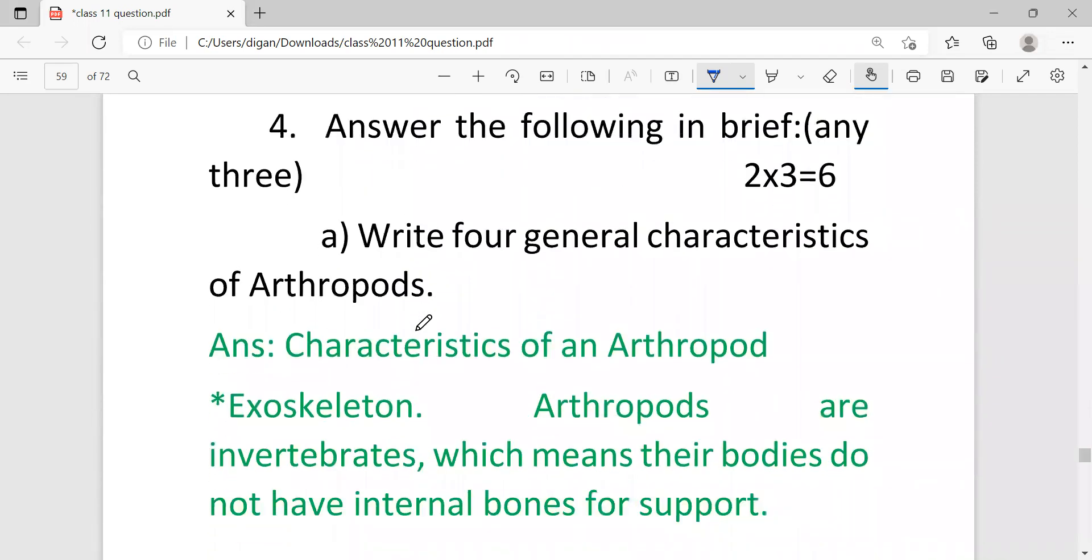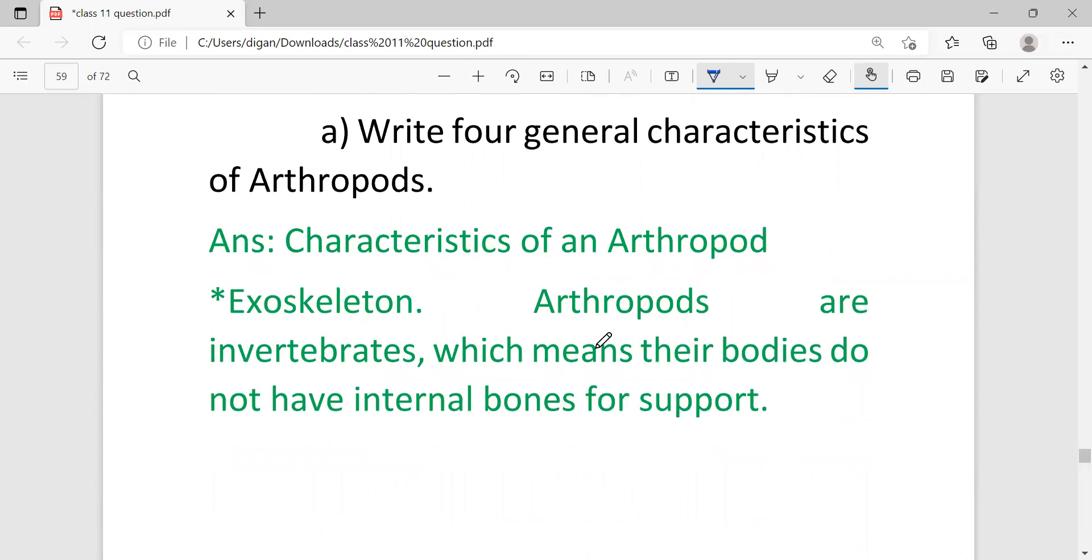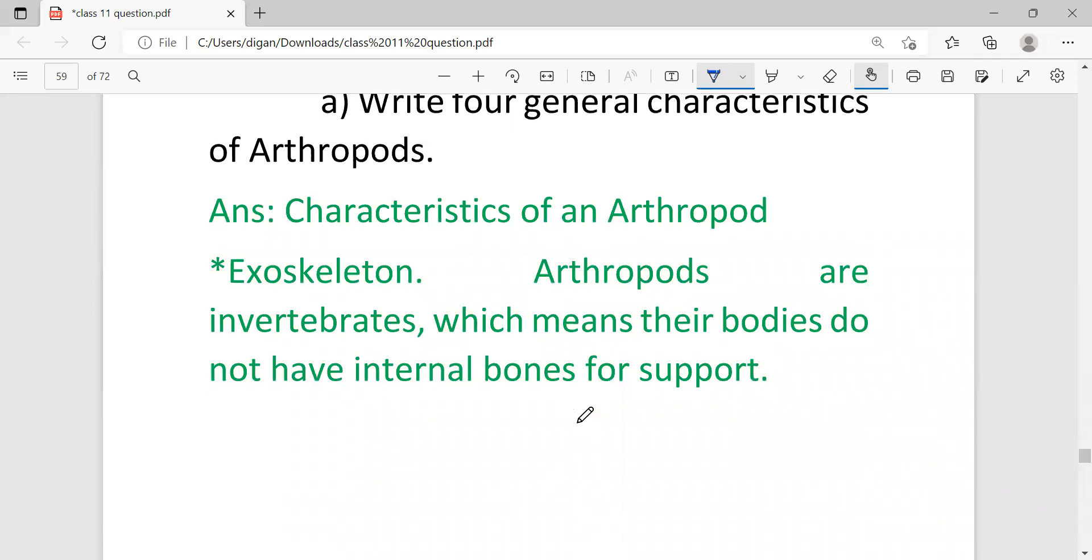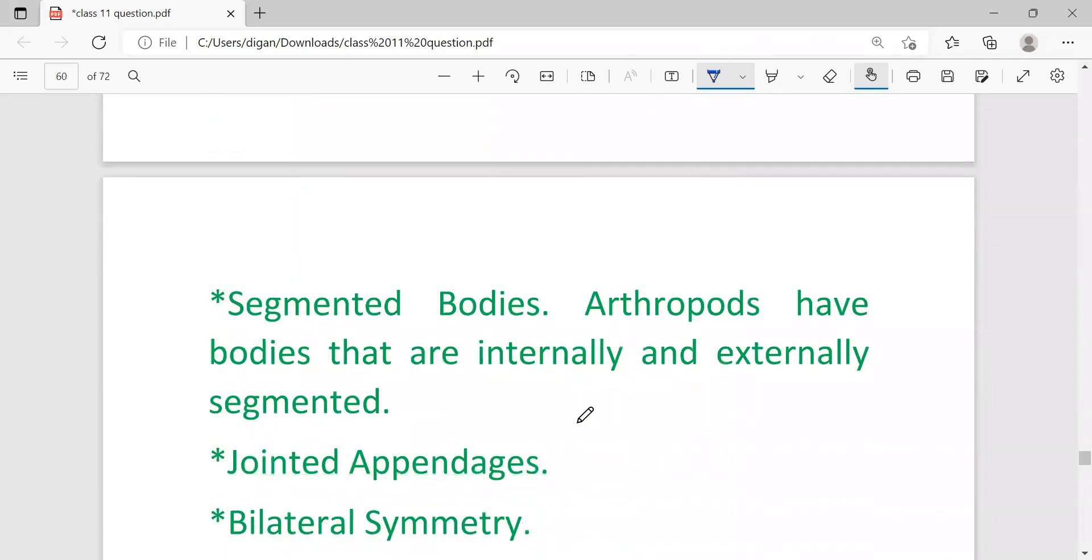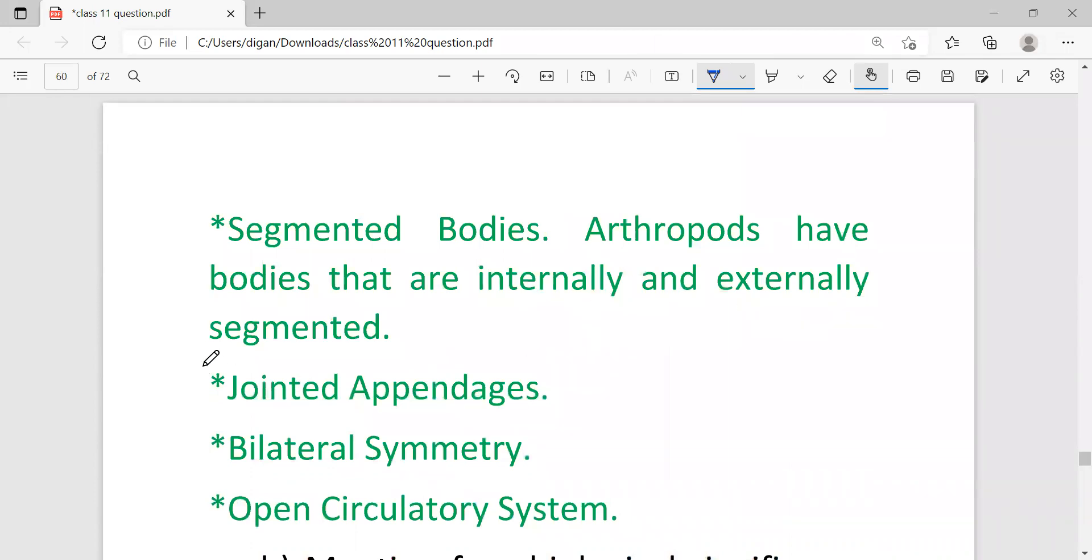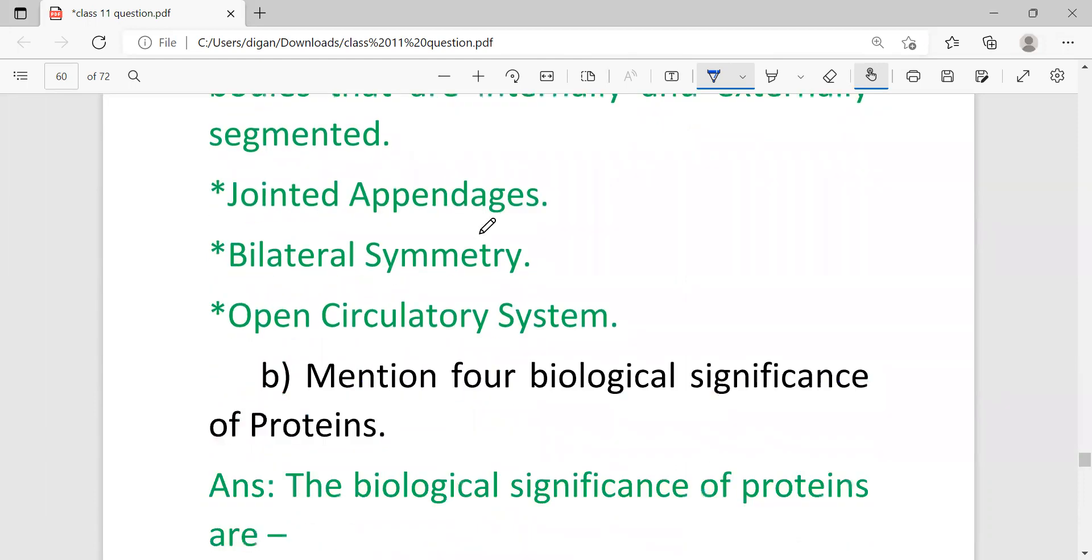Answer the following in brief, any three, each carrying two marks. Write four general characteristics of arthropods. The characteristics of arthropods are: first, exoskeleton - arthropods are invertebrates which means their body doesn't have any internal bone for support. Second is segmented bodies - arthropods have bodies that are internally and externally segmented. Next is jointed appendages, bilateral symmetry, and open circulatory system. Since the question asks for four characteristics, I'm giving you five.